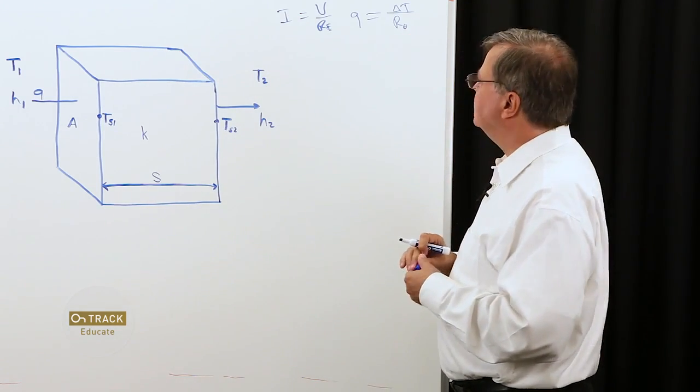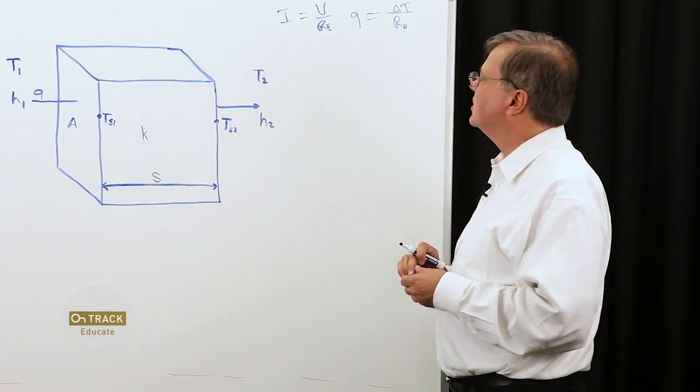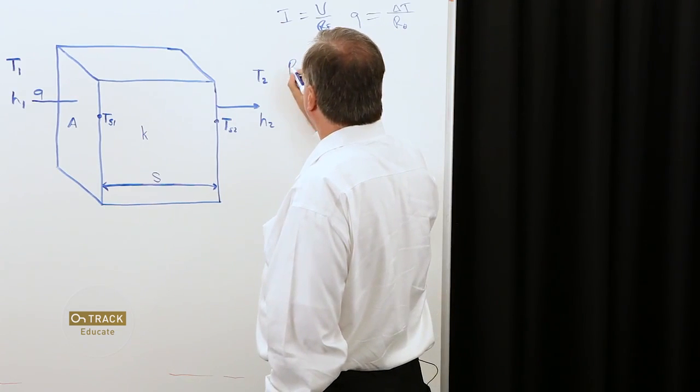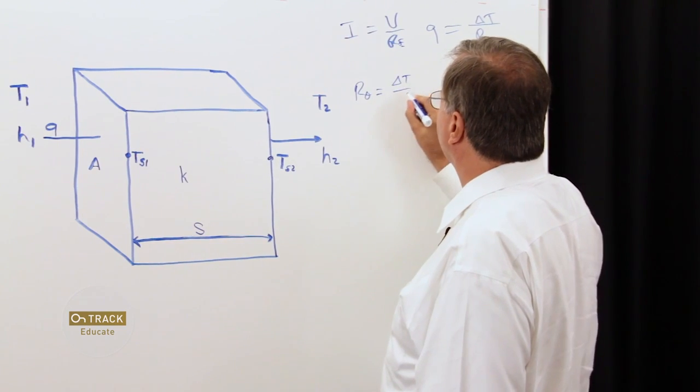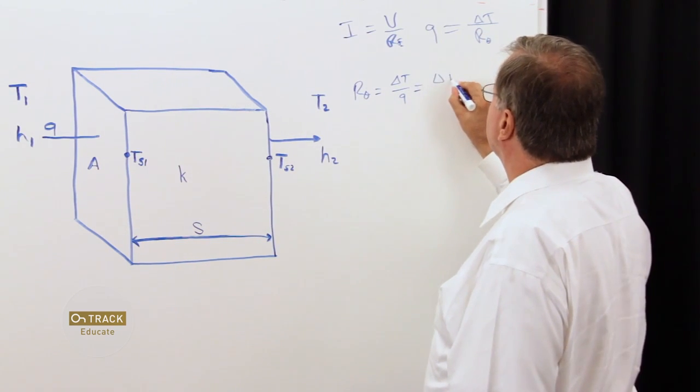So, let's look at the thermal resistance of our first convective area. We'll start out with first principles. R theta is equal to delta T over Q, which is equal to delta T,